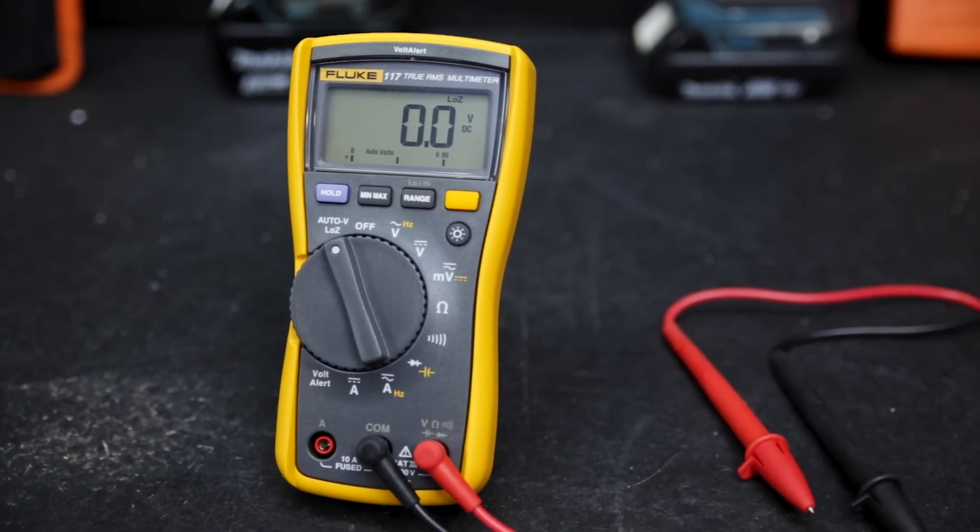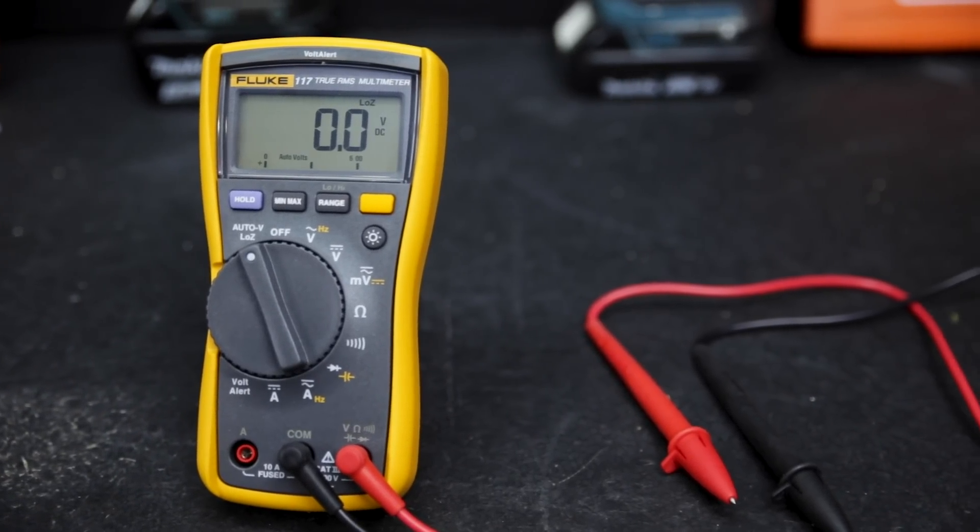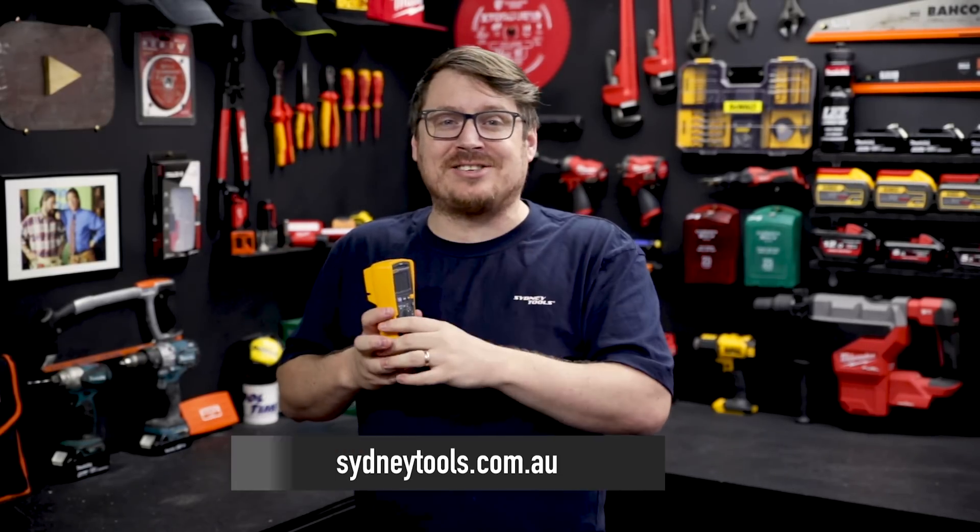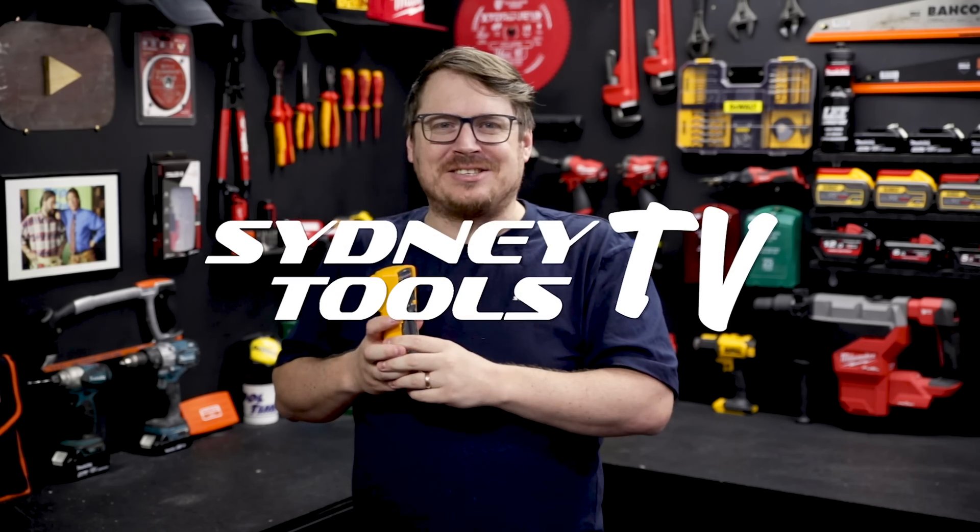The Fluke 117 is a popular and reliable digital multimeter. If you use one tell us about it in the comments section down below. If you need more info head on over to our website and until next time I'm Tim, thanks for watching Sydney Tools TV.